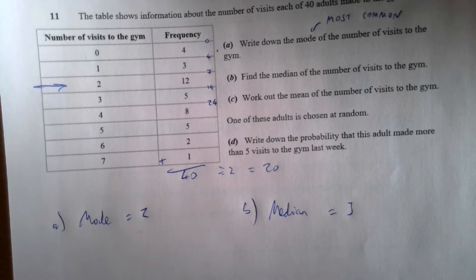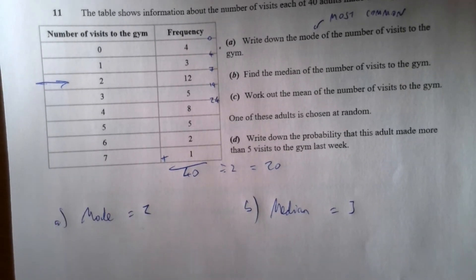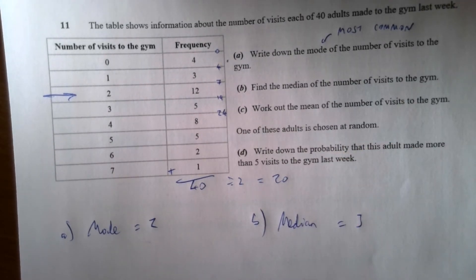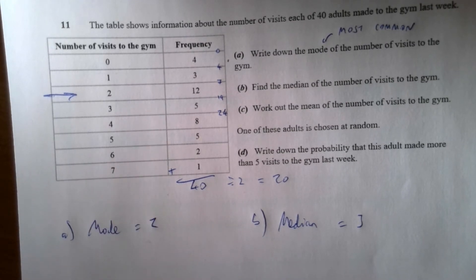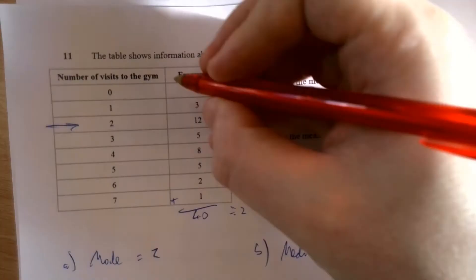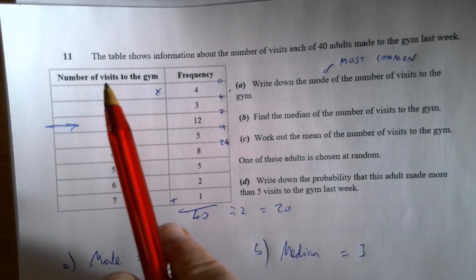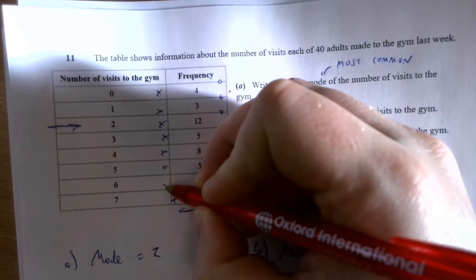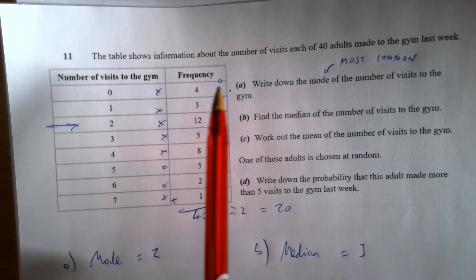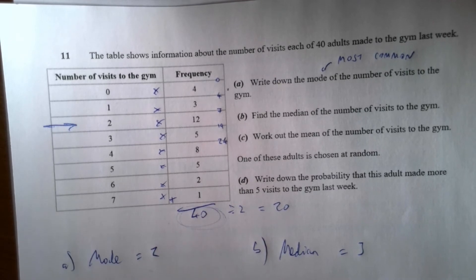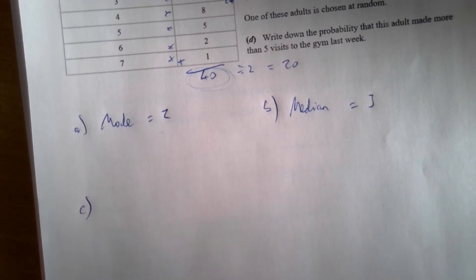Sorry about the shadow, it's quite early in the morning as I record. Work out the mean of the number of visits to the gym. The mean number of visits is adding together the total number of visits and dividing by how many people there are. That's a trick I can achieve by multiplying the number of visits for each group by the frequency. So all of these are going to be multiplied, then added together, then divided by the total frequency, 40.